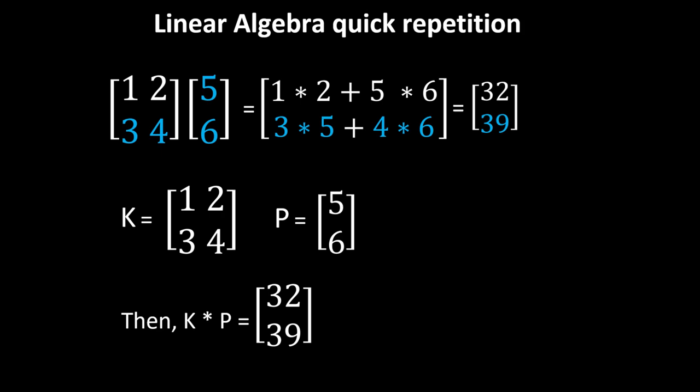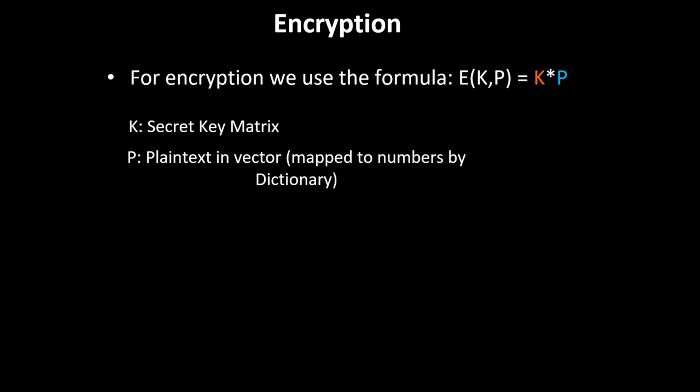So what we did is that if we have the matrix K, in this case [1, 2; 3, 4], and we have a column vector P, which was [5; 6], then if we multiply K and P and do matrix multiplication, the result is [17; 39] in that column vector.